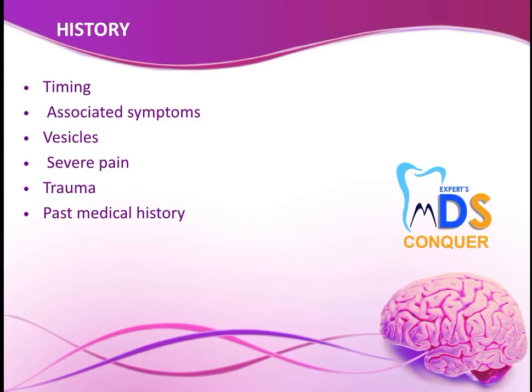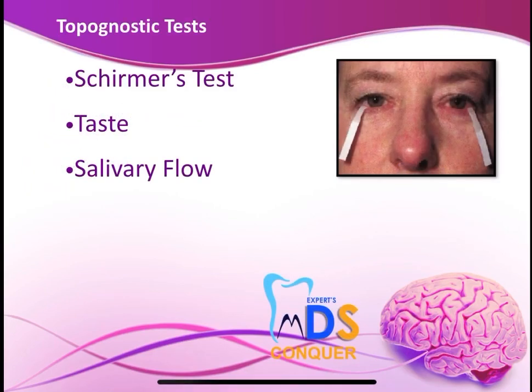Now you can elaborate the applied aspects, starting with history. Take a detailed history from the patient covering all relevant points. Next, perform the Schirmer test — since the facial nerve innervates the lacrimal gland, the Schirmer test checks for dryness of the eye or xerophthalmia. Place a filter paper in the eye and measure its wetness. Also check for taste — ask the patient to taste something and differentiate sweet from sour. You can also test salivary flow.